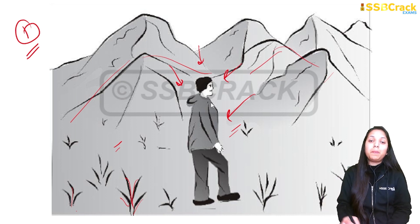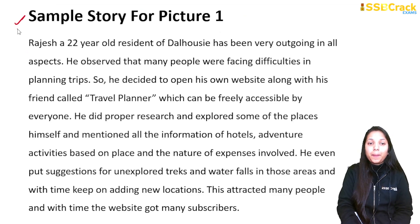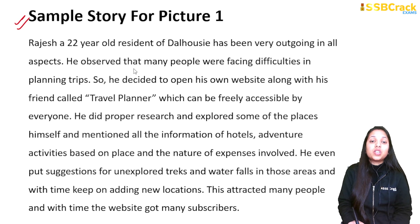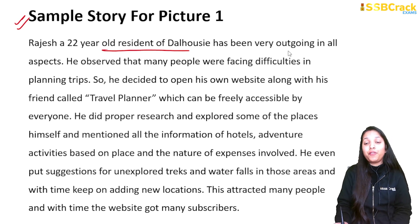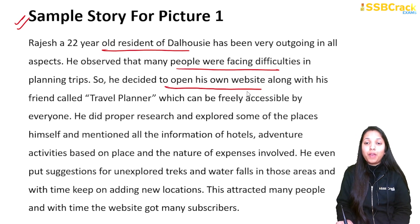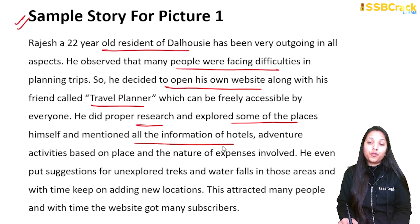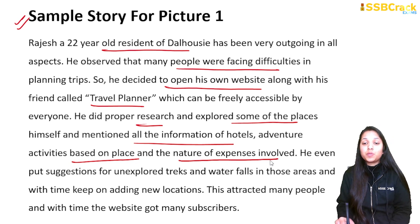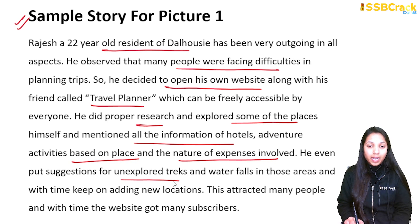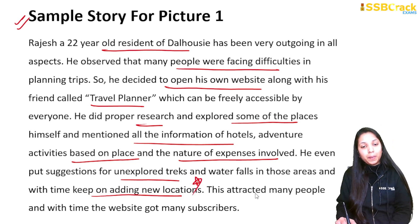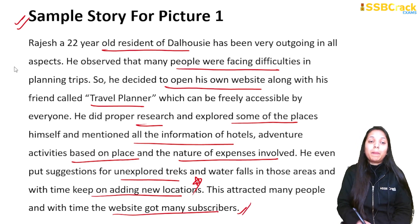Here is a sample story — don't think this is the only final story; make one of your own. 'Rajesh, a 22-year-old resident of Dalhousie, has been very outgoing in all aspects. He observed that many people were facing difficulties in planning trips, so he decided to open his own website with his friends called Travel Planner, freely accessible by everyone. He did proper research, explored places himself, and added information on hotels, adventure activities, expenses, unexplored tracks, and waterfalls. With time the website gained many subscribers.'